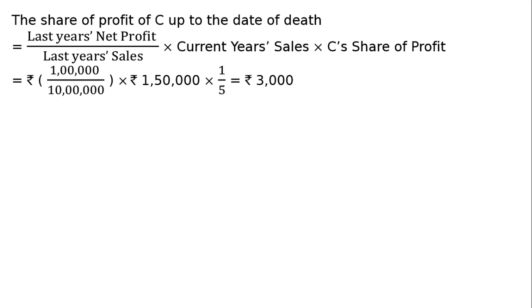So ₹3,000 is the expected profit to be paid. For the journal entry, we will write: Profit and Loss Suspense Account debited to C's Capital Account.